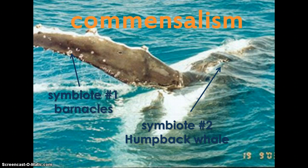The next type of symbiotic relationship is commensalism. Symbiote number one is the little white barnacles on the pectoral fin of a humpback whale. Barnacles are filter feeders, meaning they remove food particles from the water. The barnacle is definitely benefiting because as it sits on the fin and the whale moves through the water, it can easily filter feed. Symbiote number two, the humpback whale, is not benefited or harmed from this relationship.